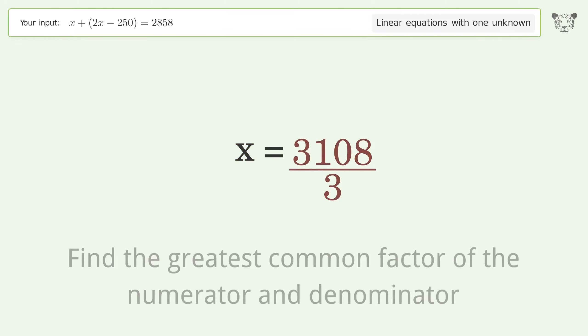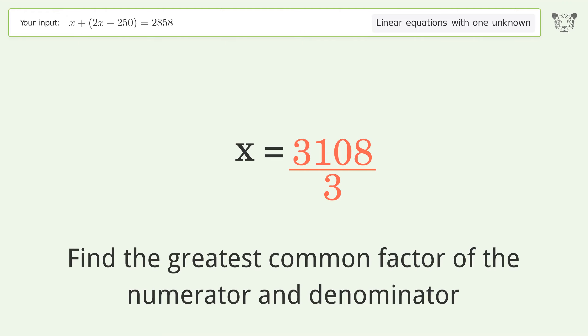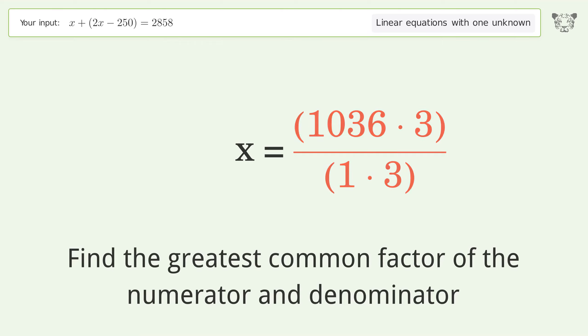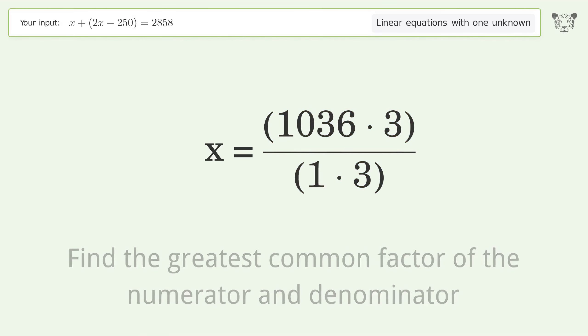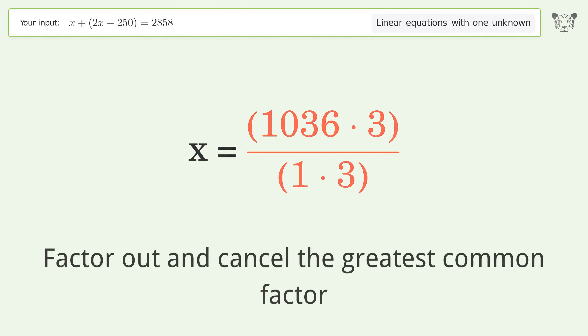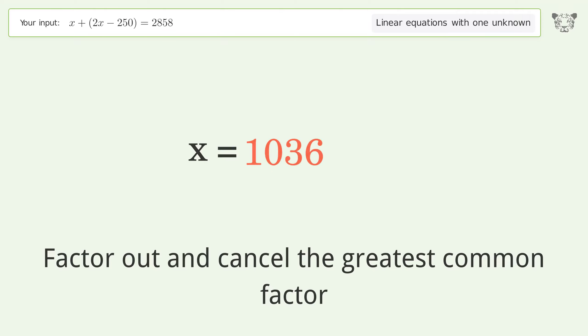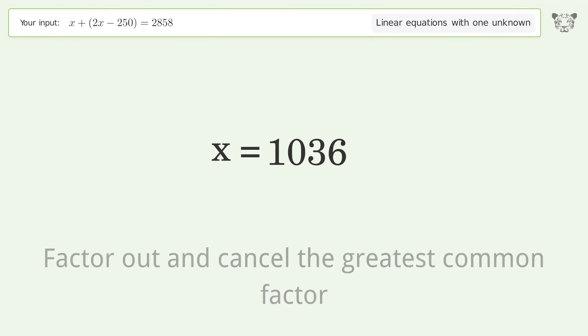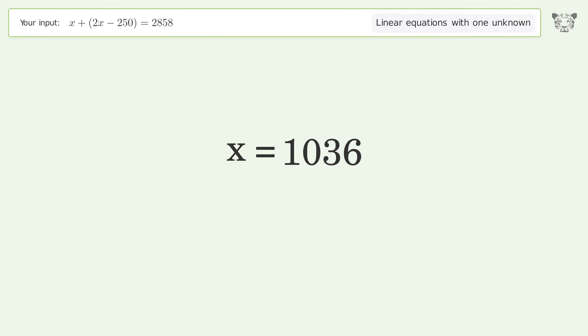Find the greatest common factor of the numerator and denominator, then factor out and cancel the greatest common factor. The final result is x equals 1036.